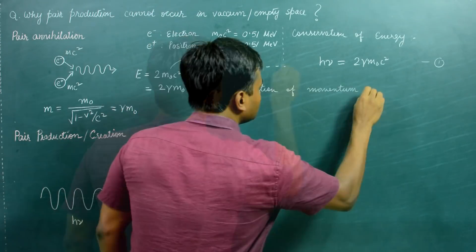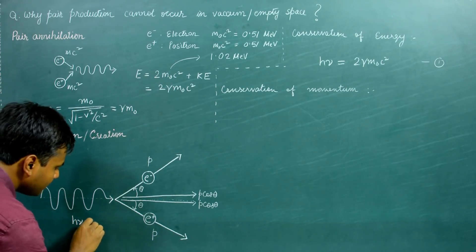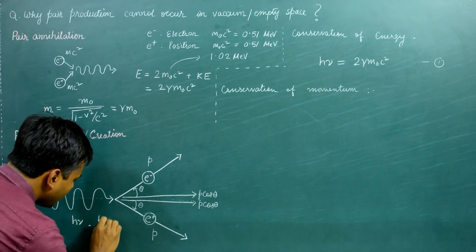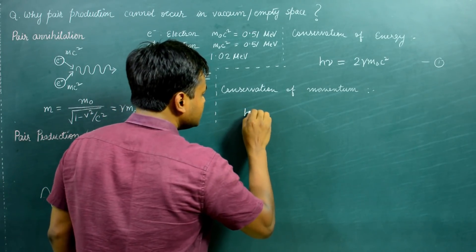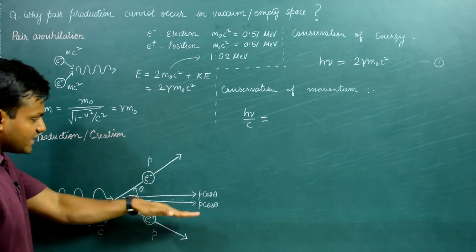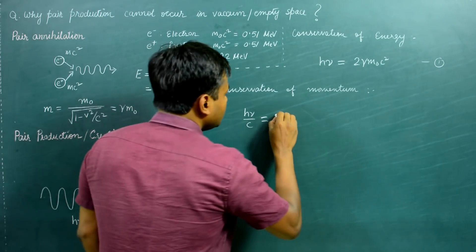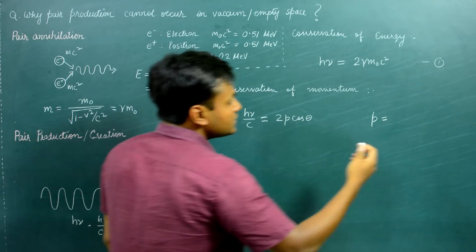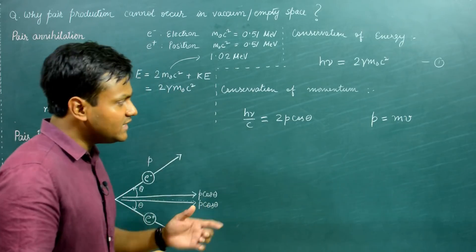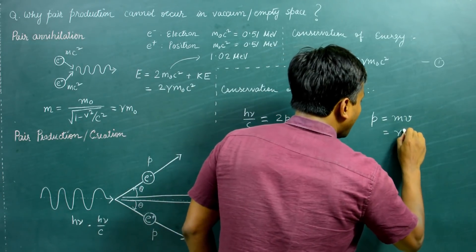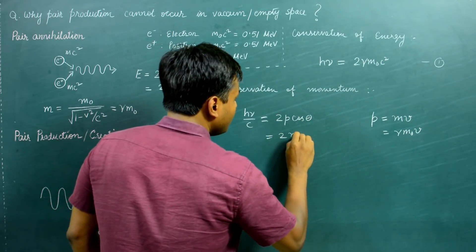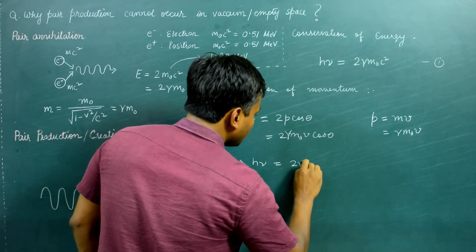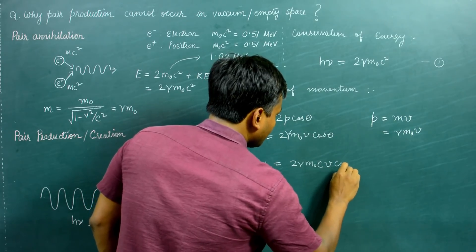Now for conservation of momentum: the momentum of the light photon is its energy divided by the speed of light, E/c = hν/c. This must equal the combined forward momentum of the electron and positron, which is 2P cos θ. The momentum P of each particle is the relativistic mass times velocity: P = γm₀v. So: hν/c = 2γm₀v cos θ, which gives hν = 2γm₀c · (v/c) · cos θ, or hν = 2γm₀c² · (v/c) cos θ.